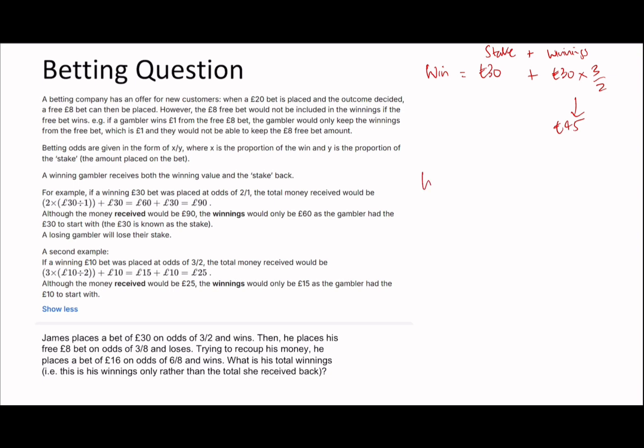While it looks long, it's not even bad to do. Then we just have to calculate for the second one. This is a bit of a trick question because it says trying to recoup his money, but he never loses any money. It's a stake of £16, and it's going to be 16 times 6/8. His winnings therefore is going to be £12 here, £45 there, so in total it's going to be £57.